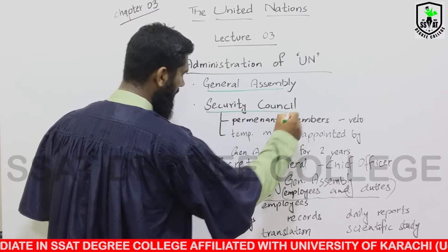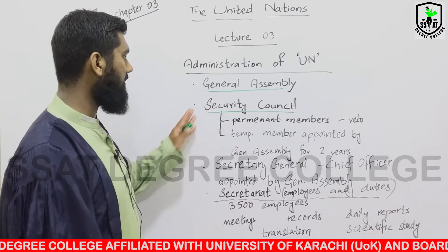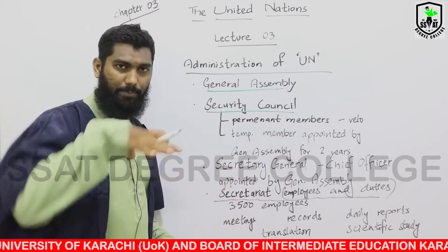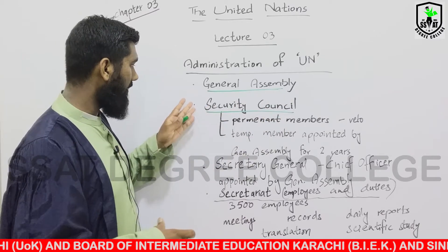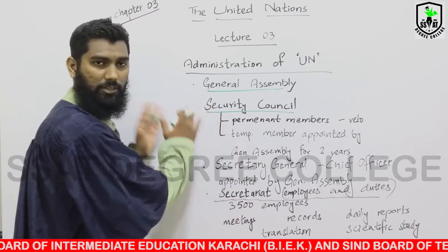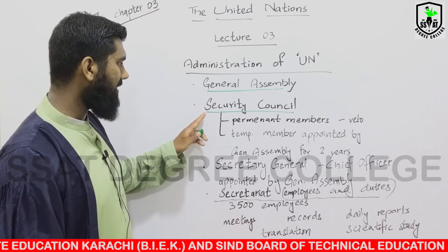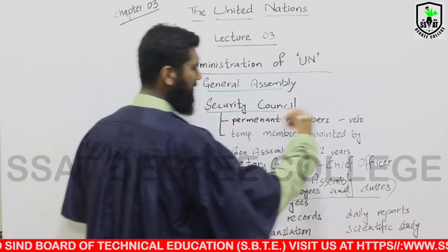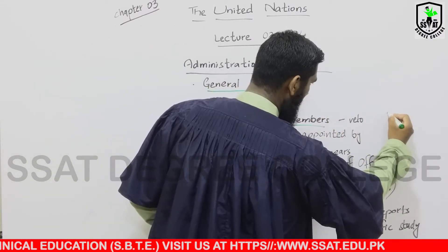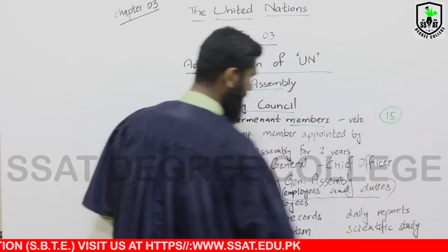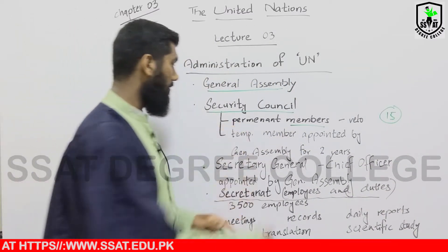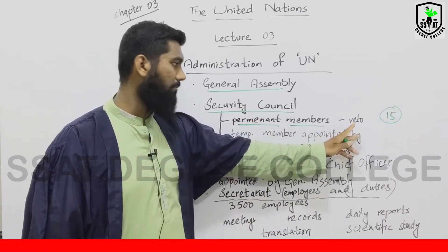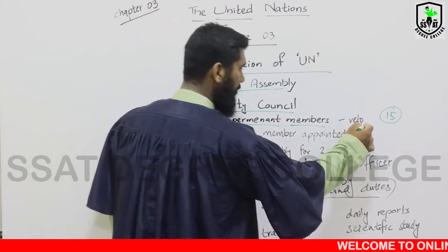If you talk about the Security Council, it is another important part of UN. General Assembly is the main and principal organ of UN, while the Security Council is also a crucial part. The Security Council has a total of 15 members. But only five members of the Security Council are permanent members and they have veto power.